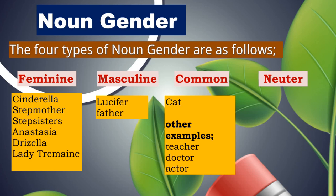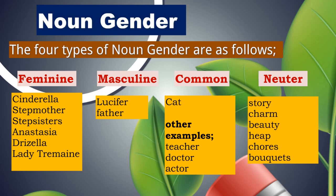What are neuter genders? Feminine, masculine and common genders are usually applicable to living beings. Neuter gender is applicable to inanimate objects. Inanimate means not animal-like — not necessarily non-living. For example, a tree is neuter gender; it is a living thing, but it is not animal-like, so it becomes inanimate. Even abstract nouns are neuter gender. From the passage: story, charm, beauty, heap, chores, bouquets — these are all neuter genders.